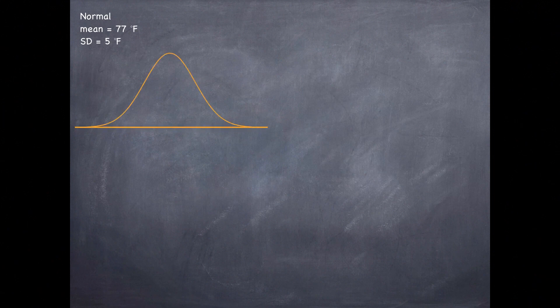We're given a normal distribution so the first thing we should do is to draw a curve and mark our mean. Then we want to think about where does this observation live, the cutoff point for the coldest 10 percent of the days in June in LA.